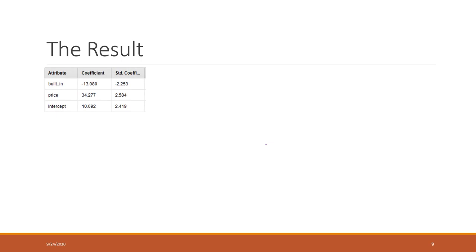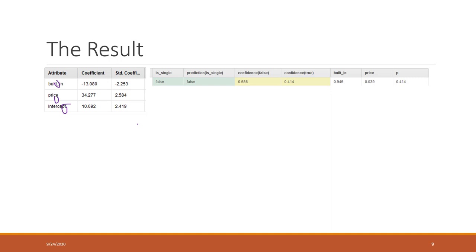Let's see how we can interpret the result. We have the coefficient for the year built and our price, and we also have the intercept. The result shows the true value — whether it is a single-family home — so that is the true label, your true answer. We also have the confidence, which is the probability that we mentioned earlier.